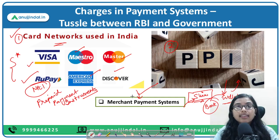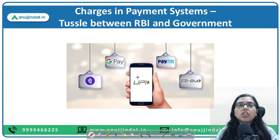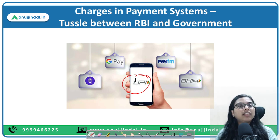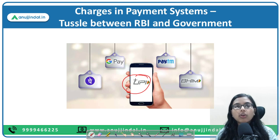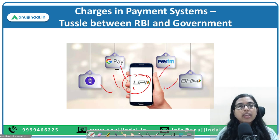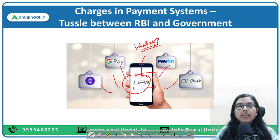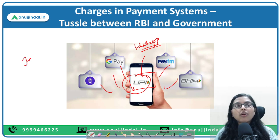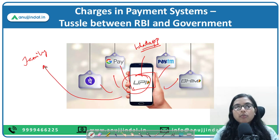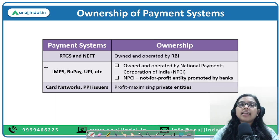We discussed everything but haven't talked about UPI — Unified Payment Interface. UPI has not been placed in any single category because it can be either a fund-based transfer system or a merchant payment system. It is a merchant payment system when using apps like BHIM, Paytm, Google Pay, or WhatsApp Pay to pay a merchant. It is a funds transfer system when you transfer money to family or friends whom you identify.